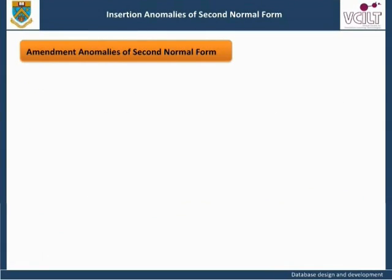Amendment Anomalies of Second Normal Form: If performer Stokes, performer ID 126, who is the only comedian in the relation, retrains and changes career to become a magician, we will lose the information that comedians are paid a fee of 90. Stokes will then be paid 72, which is the fee for all magicians. We would also find an amendment anomaly if the fee paid to a particular type of performer changed. If all singers were granted a new rate, all tuples relating to singers would need to be updated, otherwise the data would become inconsistent.